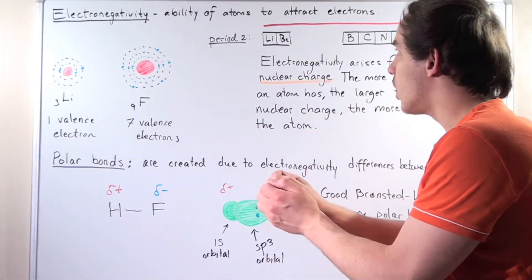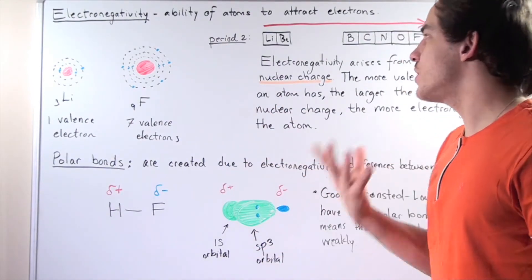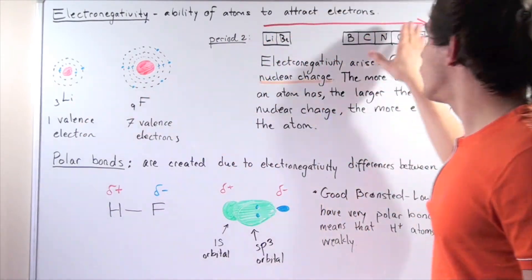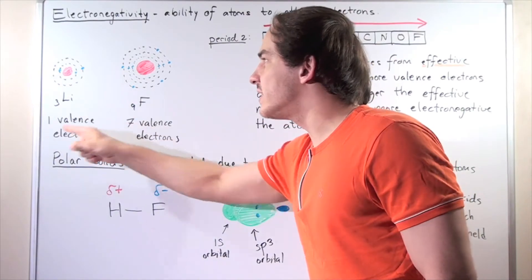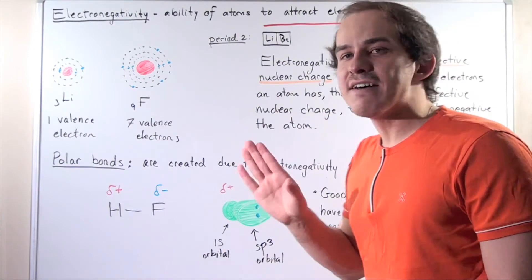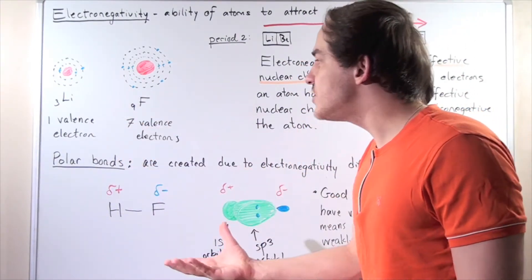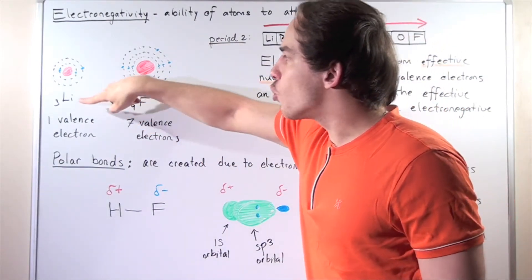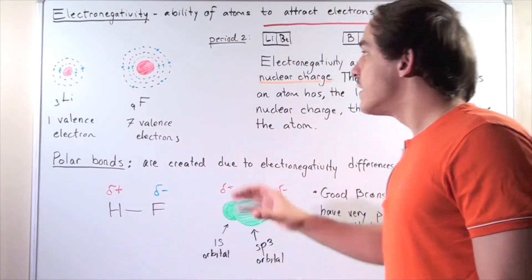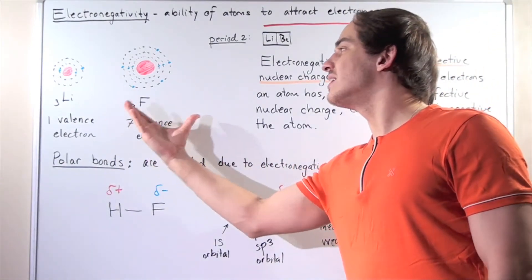The ratio of valence electrons to innermost electrons also increases. For example, lithium has one valence electron in the 2s shell, while fluorine has seven valence electrons. Because fluorine has more valence electrons, and because the ratio is seven-to-two versus one-to-two, fluorine has much greater effective nuclear charge and is therefore more electronegative.